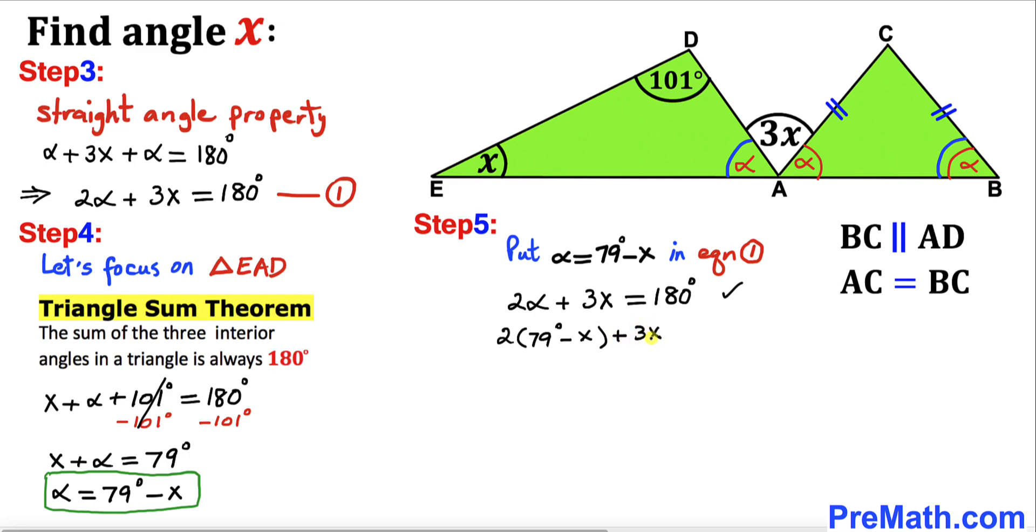Let's distribute this 2, so that's going to give us 158 degrees minus 2x plus 3x equals 180 degrees. Now we can see negative 2x plus 3x is going to give us positive x.